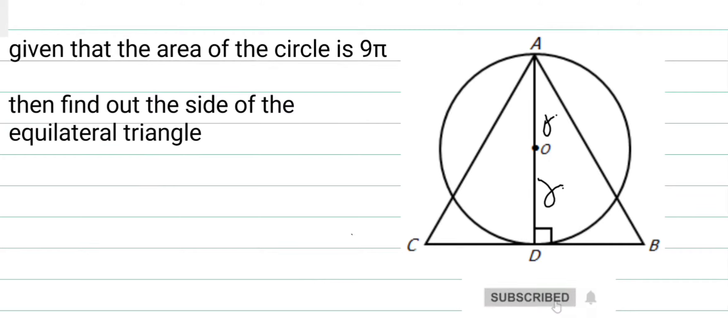So AO is equal to OD. AO equals OD equals R, the radius of the circle. Given the area is 9π, the area of the circle...